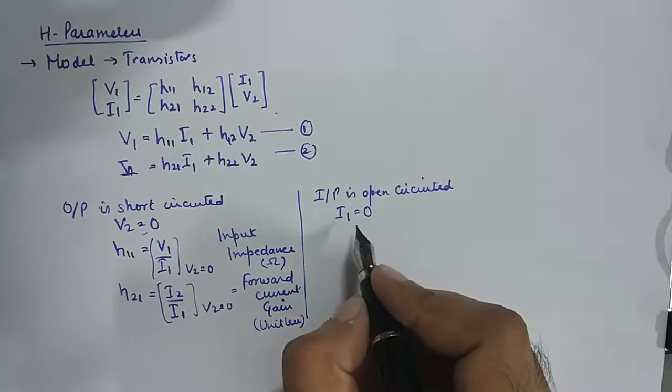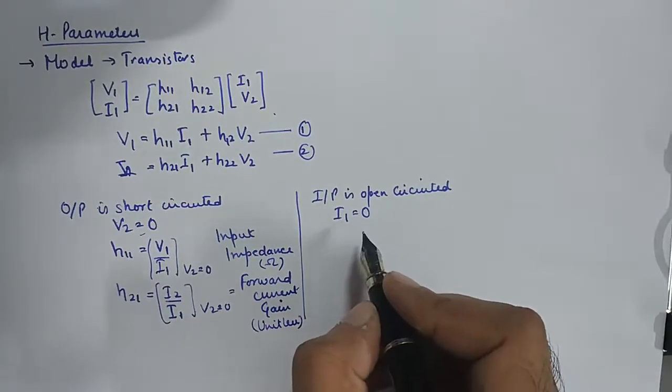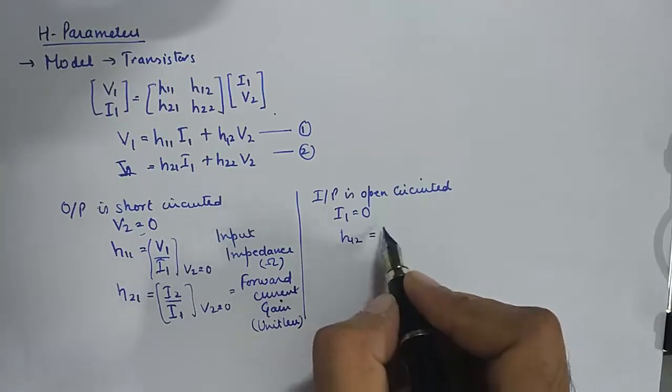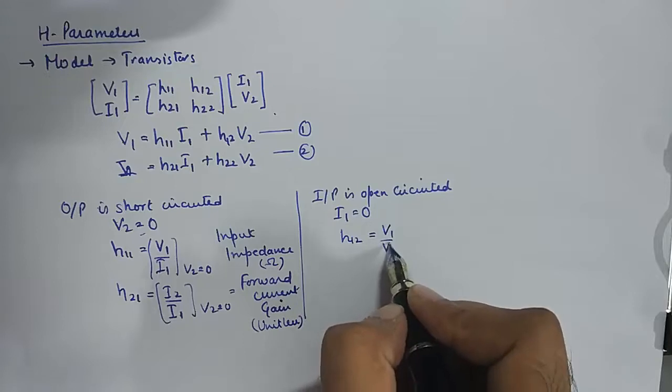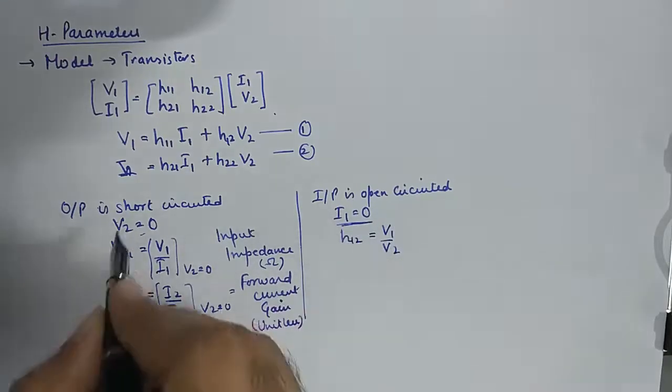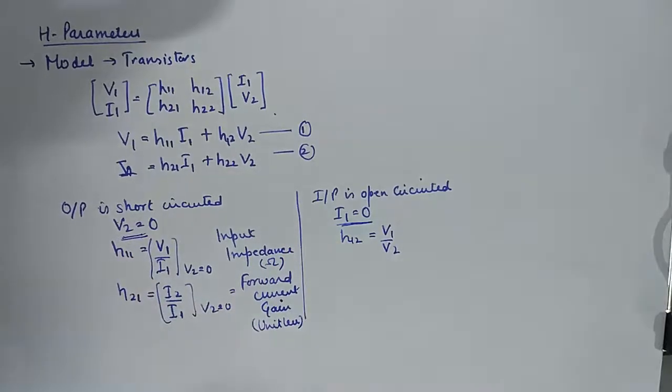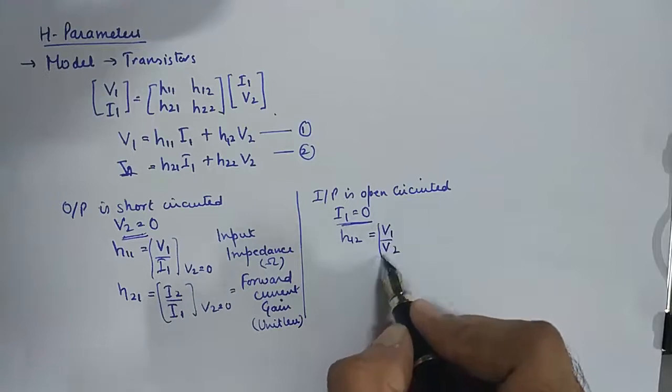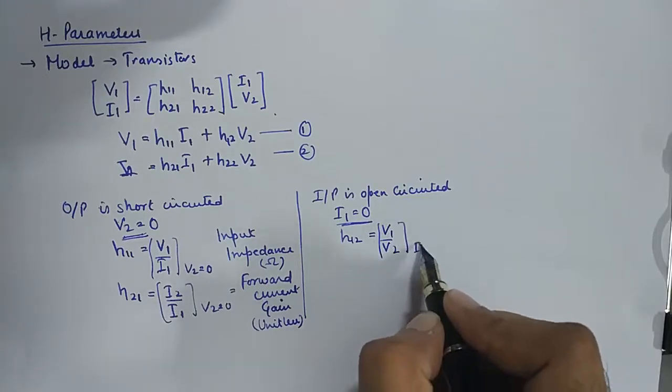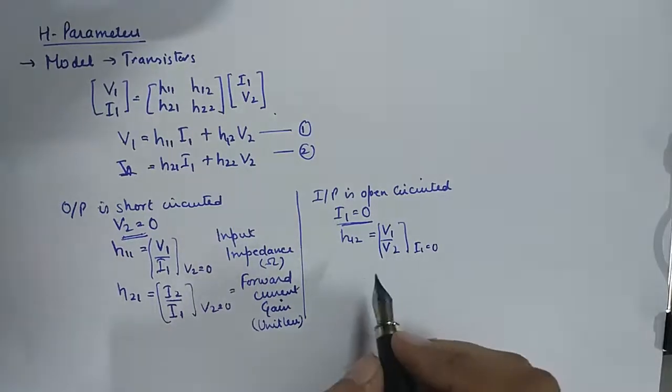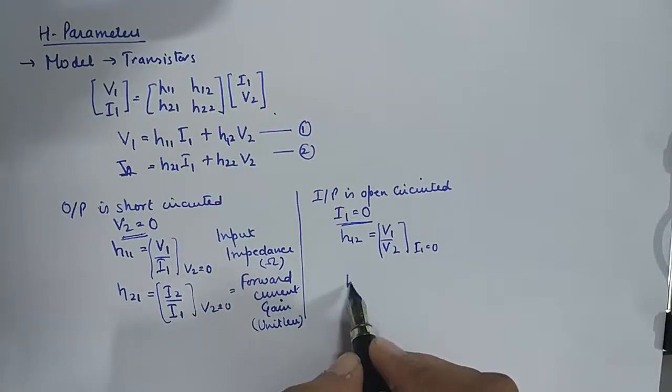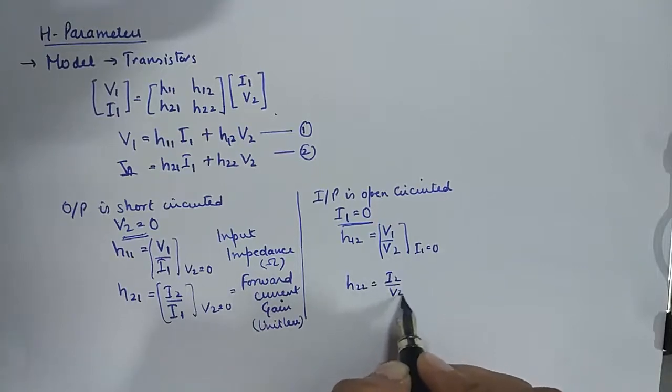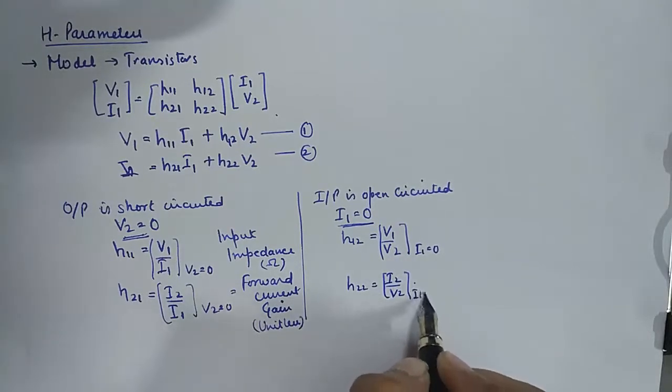In a similar way by putting I1 is equal to 0, we get h12 to be equal to V1 upon V2, and I1 is 0. Now this quantity over here is the ratio of two voltages. We put these conditions in equation 1 and 2. And this happens when I1 is 0. And secondly, we get h22 is equal to I2 upon V2 when I1 is 0.